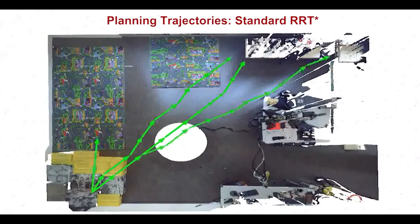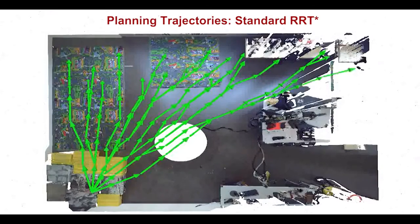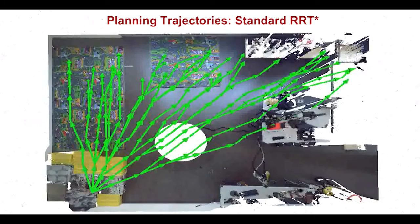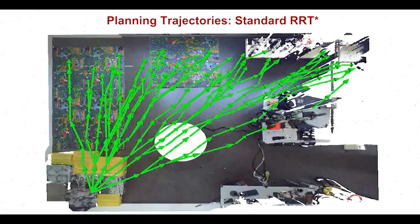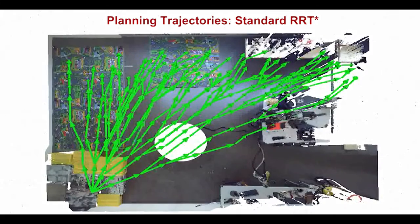To select the best trajectory, we adapt the rapidly exploring random tree star framework to minimize the pose uncertainty by maximizing the amount of texture along the path.